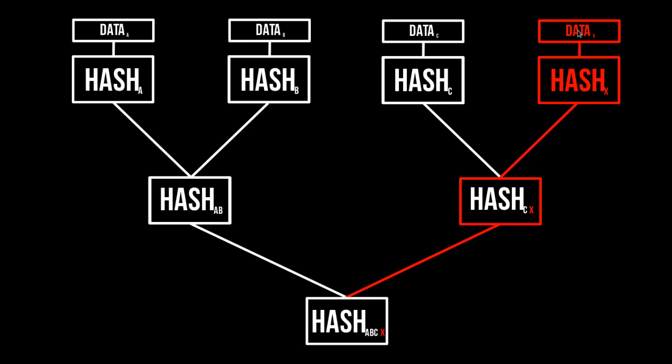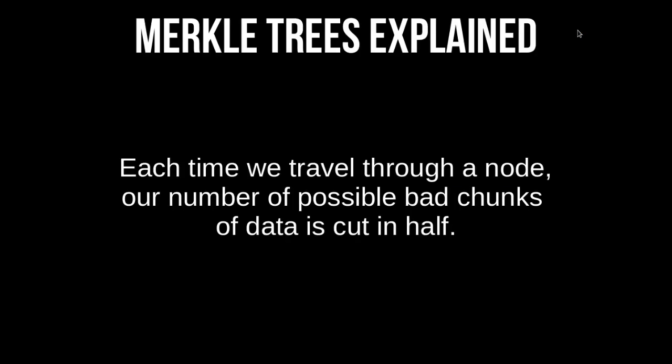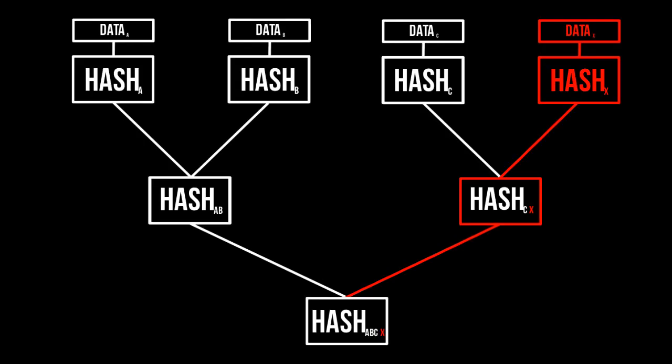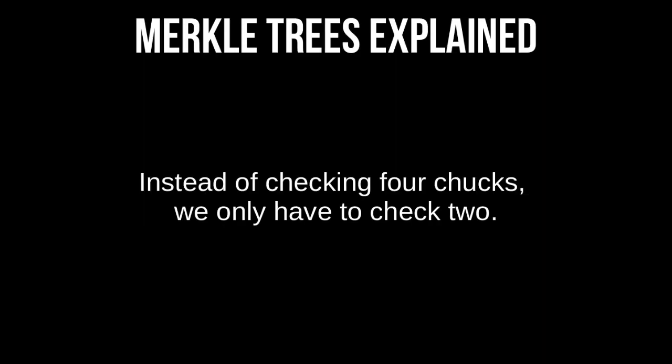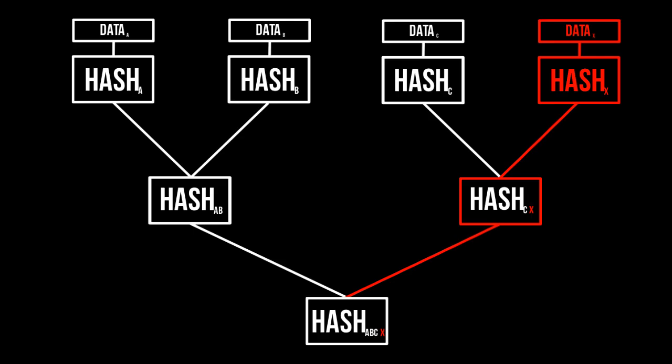You can see how much quicker that would be. Each time we travel through a node, our number of possible bad chunks of data is cut — in this example, cut in half. This is a perfect balanced tree. So instead of checking four chunks, we only have to check two.